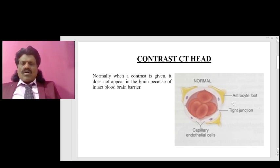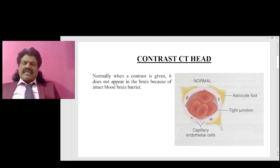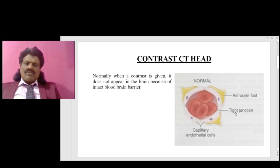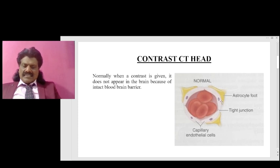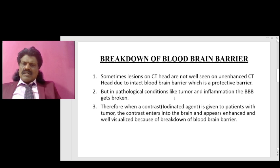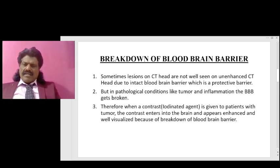Lesions not well seen on plain CT head without contrast, when contrast is given and it enters the brain and appears enhanced, indicate a breakage of the blood-brain barrier. Tumors, neurocysticercosis, or tuberculoma can be well seen after giving contrast — this is known as contrast-enhanced CT head. Sometimes lesions are not visible on plain CT due to intact blood-brain barrier, but in pathological conditions like tumor and inflammation, the barrier breaks down and the iodinated contrast agent appears enhanced and well-visualized.